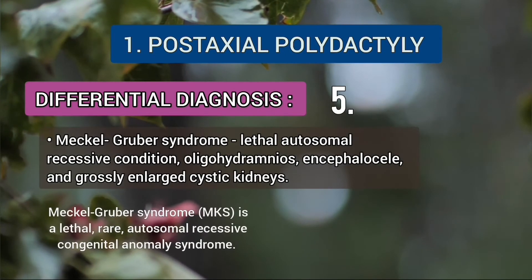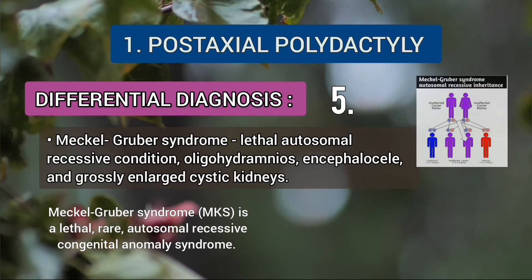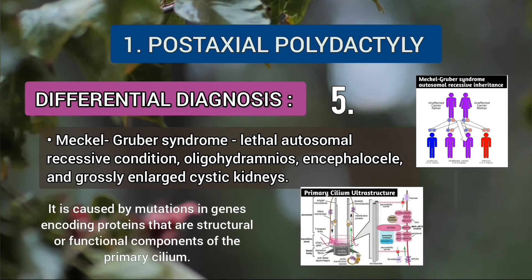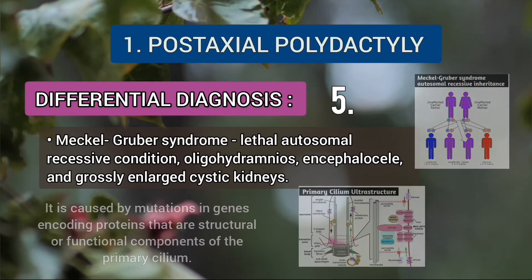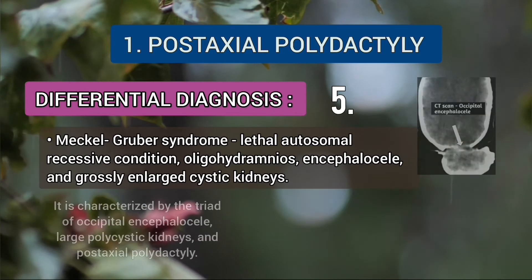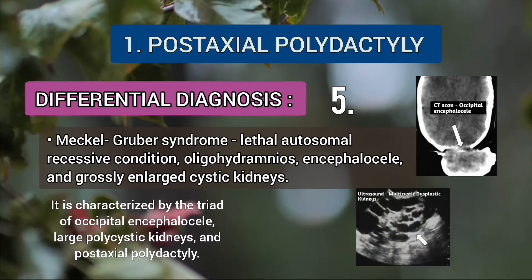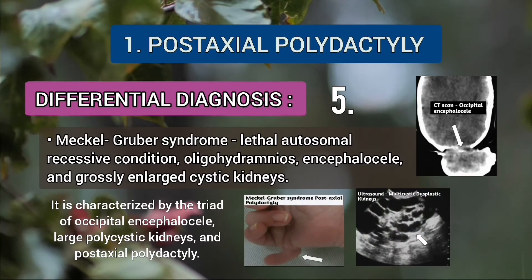Another important differential is Meckel-Gruber syndrome. It is a lethal rare autosomal recessive congenital syndrome caused by mutation in genes encoding proteins that are structural or functional components of the primary cilium. It is characterized by a triad of occipital encephalocele, large polycystic kidneys, and post-axial polydactyly.